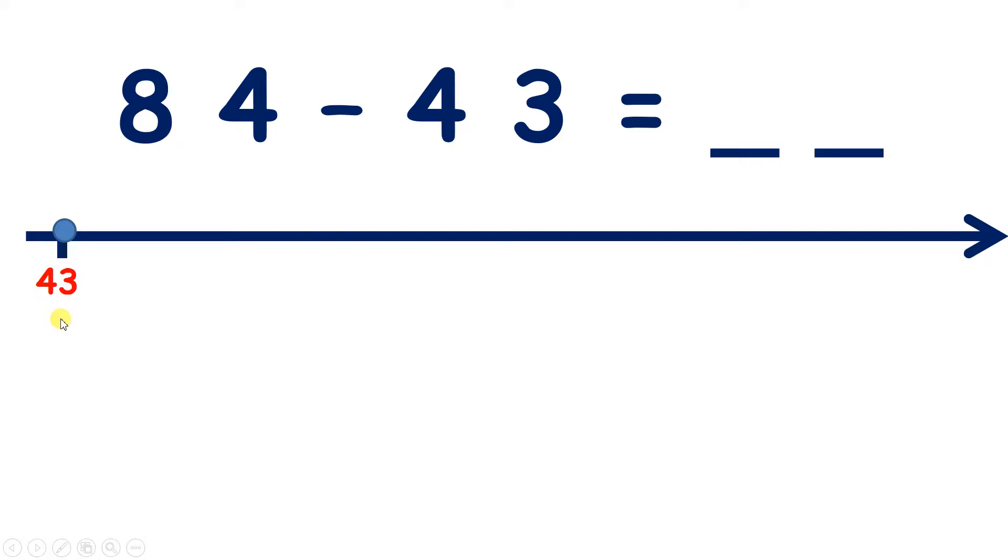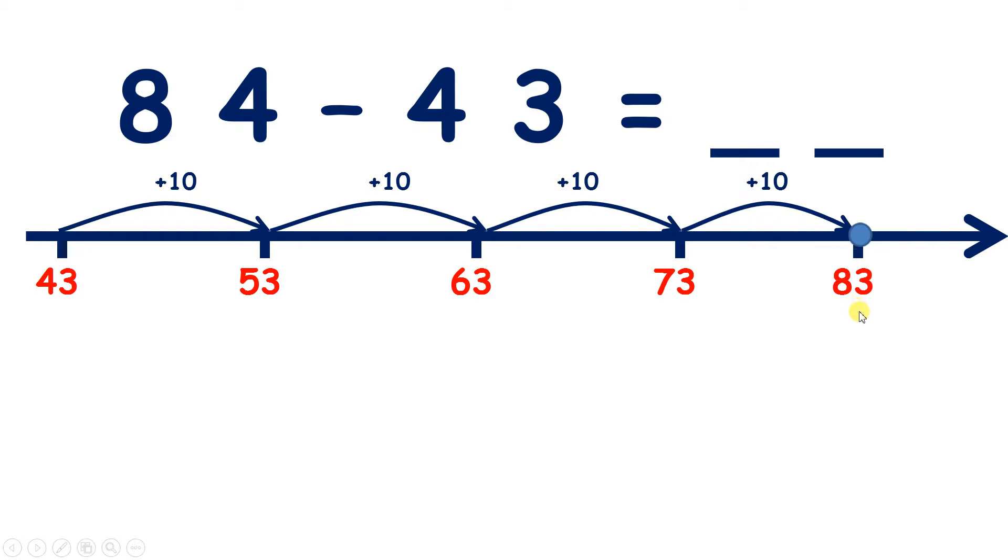So if we count up in tens we get 53, 63, 73, 83. And I'm not going to add any more tens because the next 10 would be 93 and that would be too many, it would be above the number that we're aiming for.